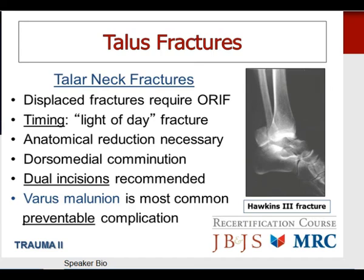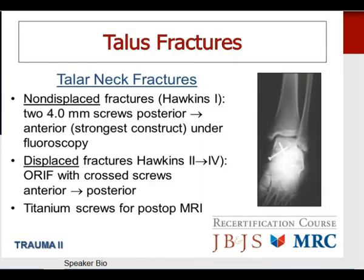Non-displaced Hawkins I fractures can be managed with two 4.0 millimeter screws in a posterior-to-anterior orientation — the strongest construct. Displaced Hawkins II, III, and IV injuries are treated with ORIF using crossed screws in an anterior-to-posterior orientation. Titanium screws are recommended to allow post-operative MRI. Post-operatively, non-weight bearing for eight weeks. A Hawkins sign — a subchondral lucency seen on the mortise AP x-ray at six to eight weeks — is a positive prognostic indicator meaning the bone is undergoing successful remodeling with intact blood supply. The risk of osteonecrosis increases exponentially from Hawkins I to Hawkins IV, with virtually 90-100% risk in Hawkins IV injuries. Subtalar arthritis is the most common overall complication.